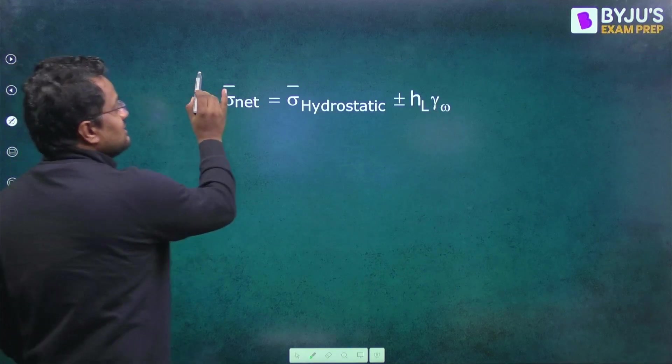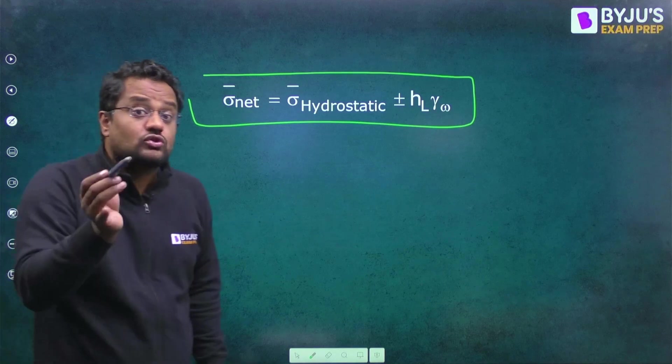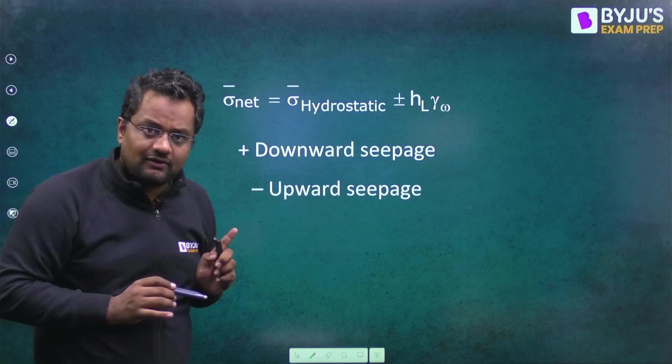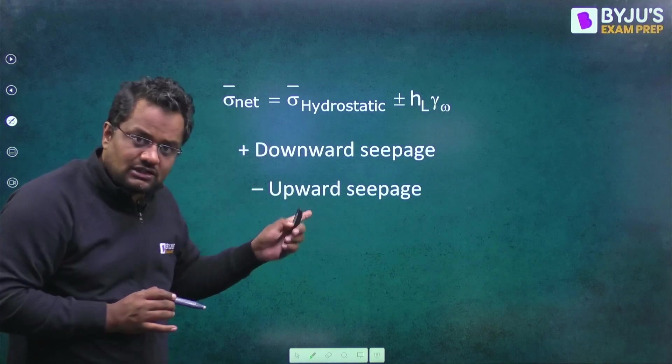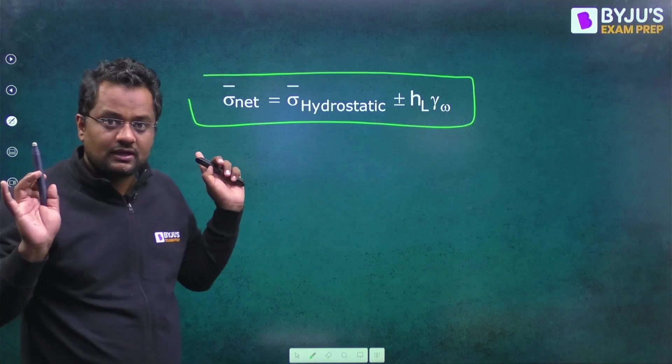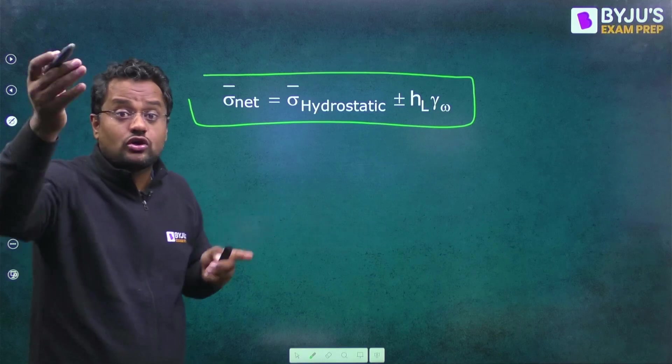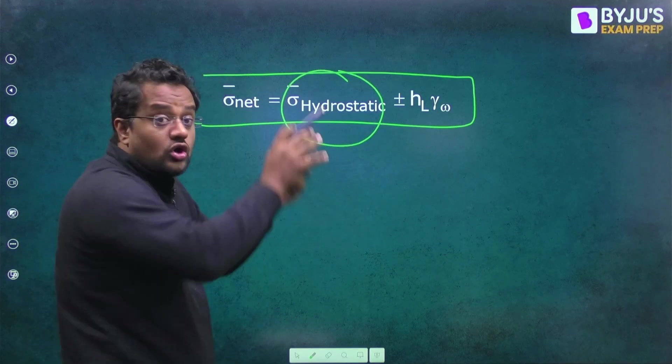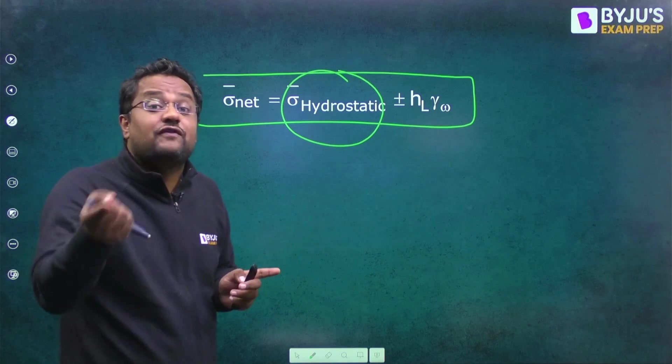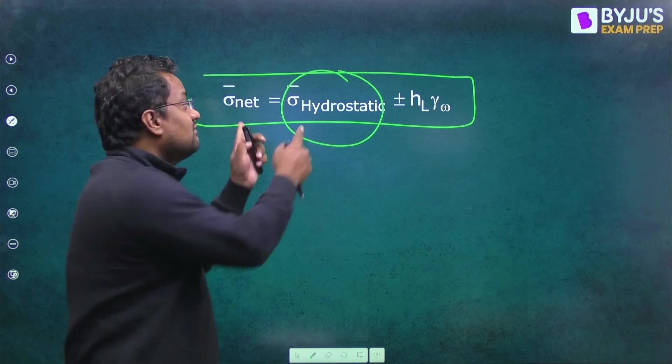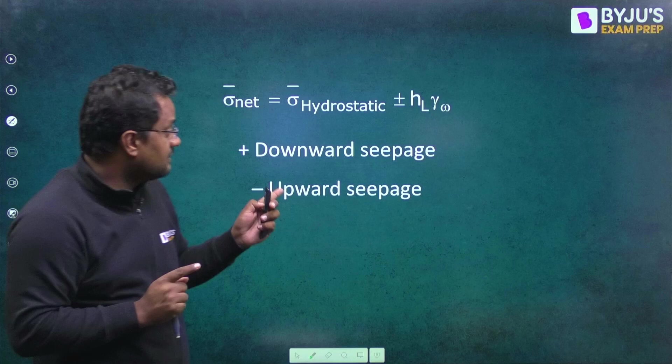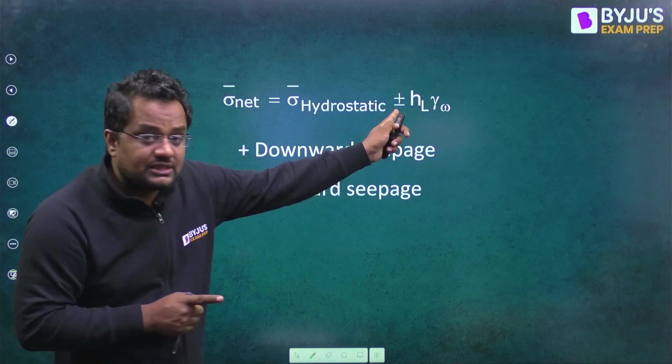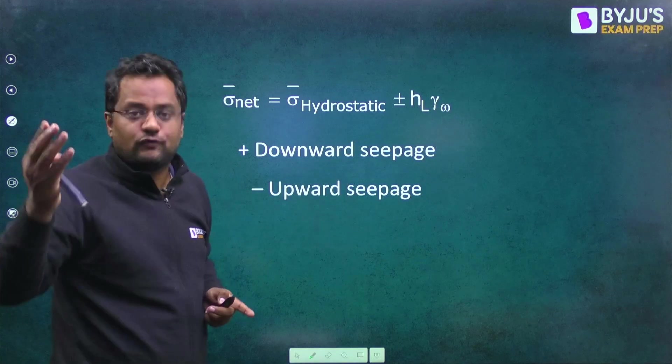You know this in seepage condition, sigma bar net is sigma bar hydrostatic. In the hydrostatic condition, when there is no seepage, plus minus HL gamma W. For downward seepage, it is plus. For upward seepage, it is minus. Suppose you don't know the answer and you are not able to find the hydraulic gradient. So what to do? Find this. This is very easy. Everybody knows this. Now, suppose you don't know the answer. So check that if it is downward seepage, your answer will be more than this because for downward seepage is plus. And if it is upward seepage, answer will be less than this because for upward seepage is minus. So this is how you can eliminate few options.